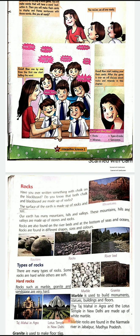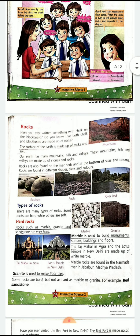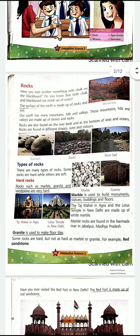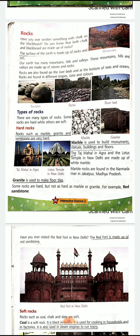Rocks are also found on the riverbed or at the bottom of the sea and oceans. They are found in different shapes and different places. Hard rocks include marble, granite, and red sandstone. Red sandstone is not as hard as marble or granite, but it is also hard. These are used for making various monuments and for various purposes.